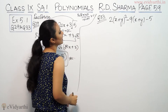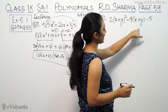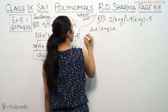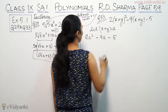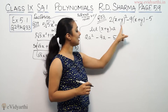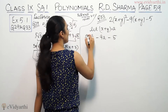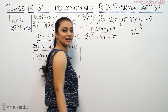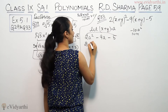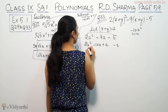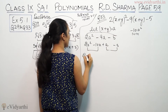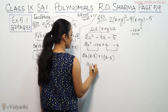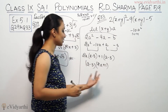Now question number 33. This says (2x plus y) whole square minus 9(x plus y) minus 5. So let's suppose x plus y equals a. So we have 2a² minus 9a minus 5. Multiply the first and last: 2 times minus 5 is minus 10. We split minus 9a into minus 10a plus a. So 2a² minus 10a plus a minus 5. Factoring gives (2a plus 1)(a minus 5).